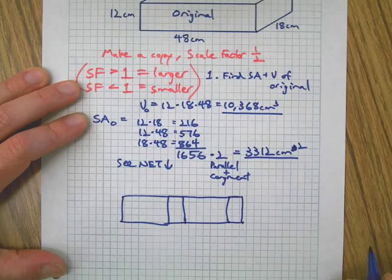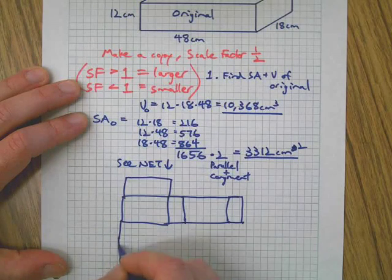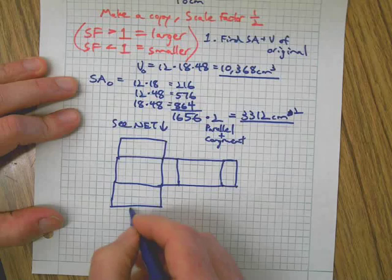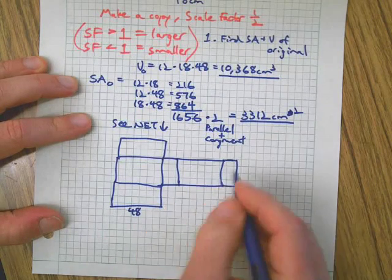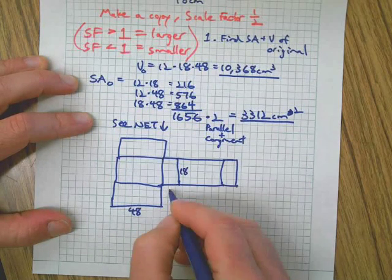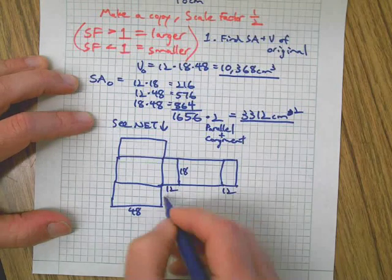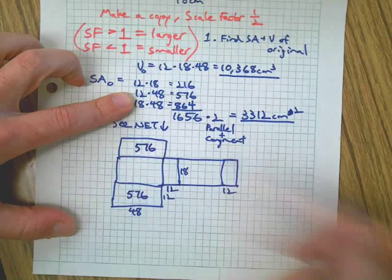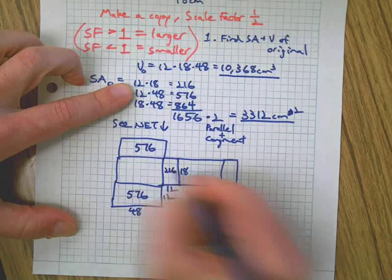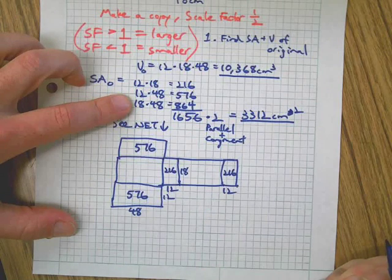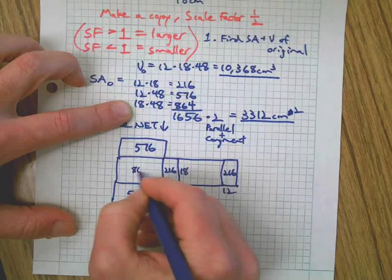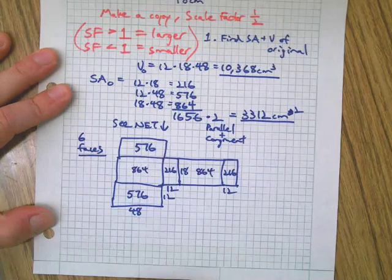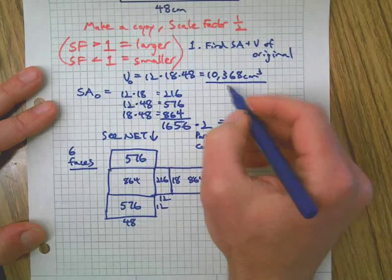The net helps explain the multiply-by-2 step. If this is the net for our prism, we've got 48 across, sections of 18 and 12. We work out 48 times 12, which appears twice — top and bottom. Then 12 times 18, which also appears twice. And 18 times 48, our 864, which is also twice. On a rectangular prism you have two of everything — a total of six faces. That's why we multiply by 2.